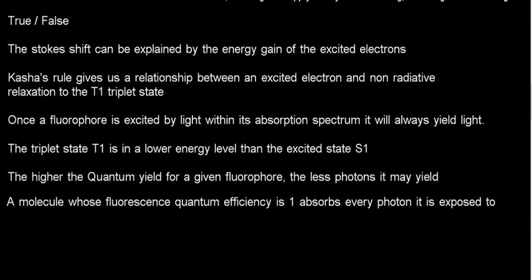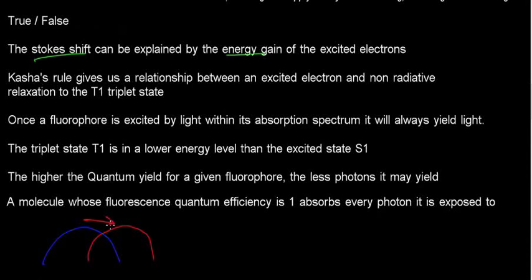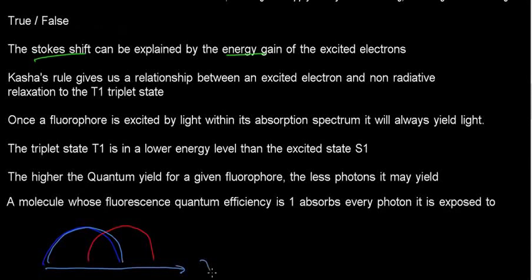The Stokes shift can be explained by the energy gain of the excited electrons. The Stokes shift is the phenomenon by which we have some sort of absorption spectrum that gets shifted towards a redder wavelength. So if my absorption spectrum is here and my emission spectrum is here, with wavelength on the x-axis, the emission spectrum is shifted towards longer wavelengths.